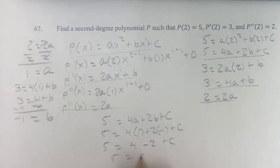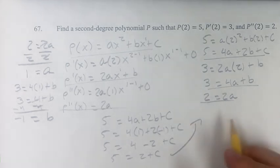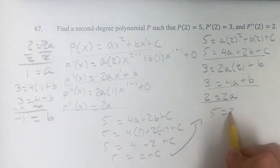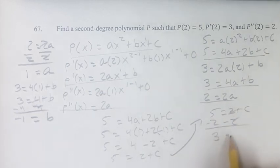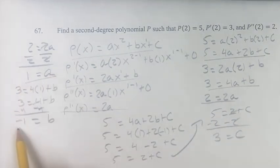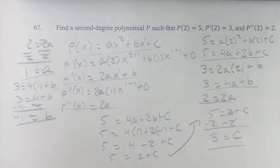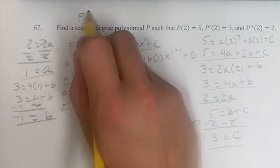5 is equal to 2 plus C. 5 is equal to 2 plus C, just rewriting it, so we don't run out of space. We get 3 is equal to C. So we know A, we know B, we know C. We can plug them into the original form of P to give us our second degree polynomial.